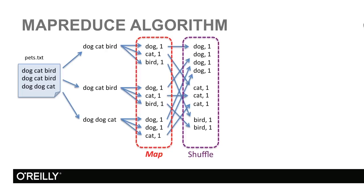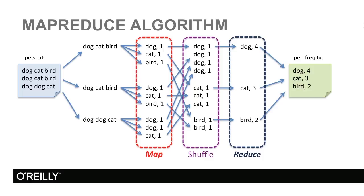Now that we have all the dogs in one place, we can aggregate the values. This is done in the next step, called the reduce step, where we find that we have four dogs, three cats, and two birds. When we get the results of this reduce step, we put this all together into our result file with pet frequencies.